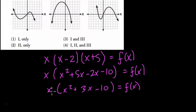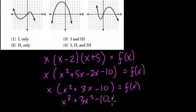We distribute the x. x times x squared is x cubed. x times 3x is 3x squared. x times negative 10, that's negative 10x.